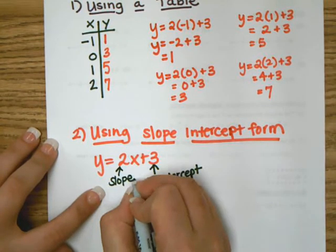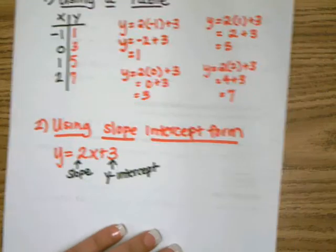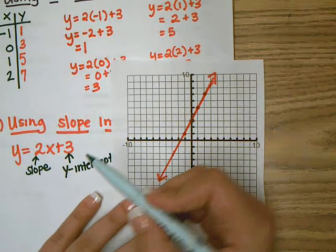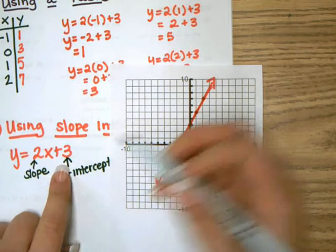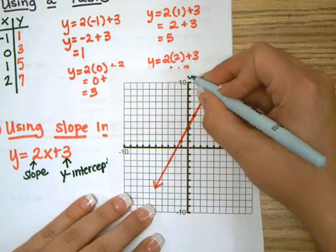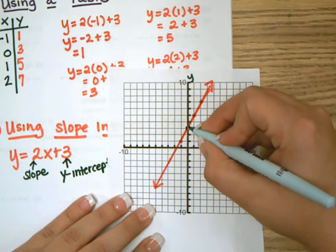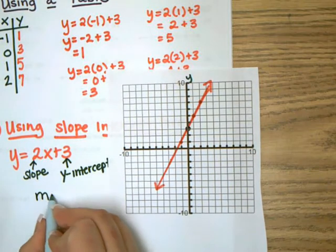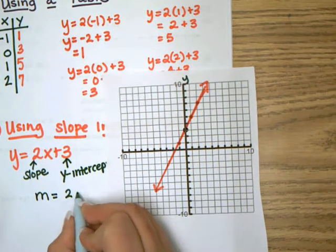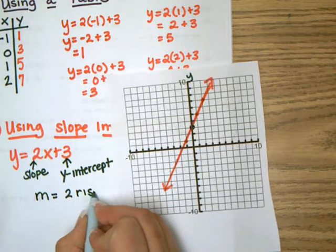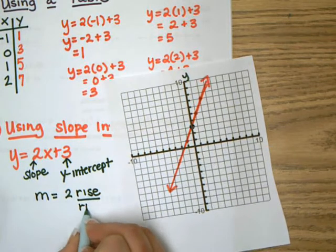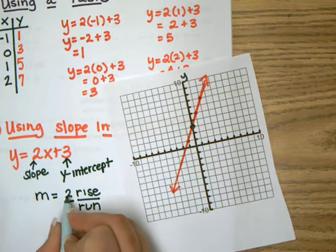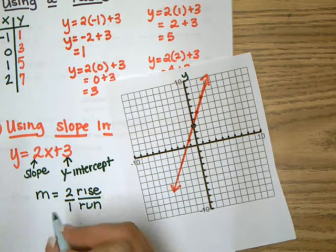So these two numbers tell us two very important things. This tells us the y-intercept, and this tells us the slope — the number in front of the x is the slope. So if we take our graph, this tells us that it crosses at three on the y-axis. Our slope, our m, is two. So I'm going to label that rise and run. We can always divide every number by one and it doesn't affect it — two divided by one is still two.